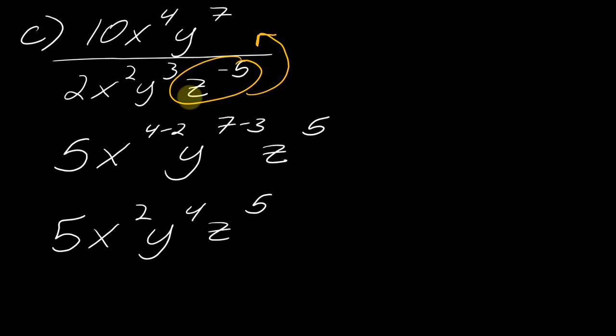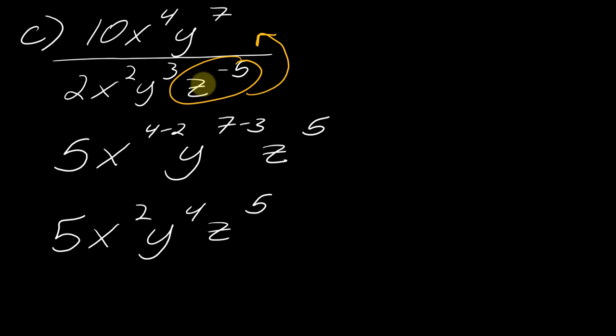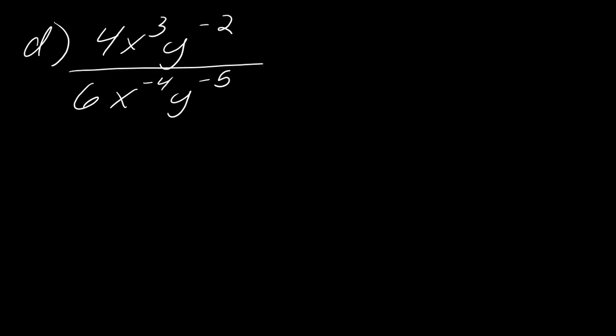A key theme to remember: when negative exponents are scattered throughout a problem, it's usually easier to rearrange the problem to eliminate them first. Every once in a while you don't need to do that, but on the whole that's usually the easier approach.